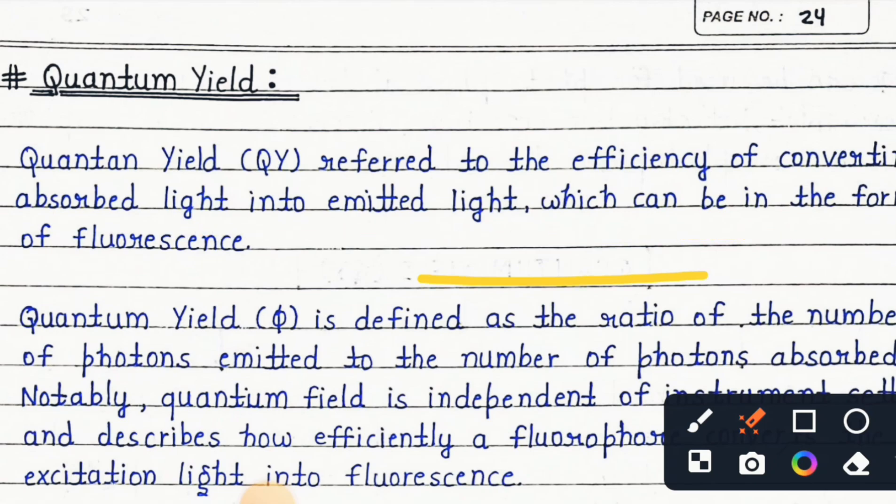which can be in the form of fluorescence. Quantum yield (φ) is defined as the ratio of the number of photons emitted to the number of photons absorbed. Notably, quantum yield is independent of instrument setting and describes how